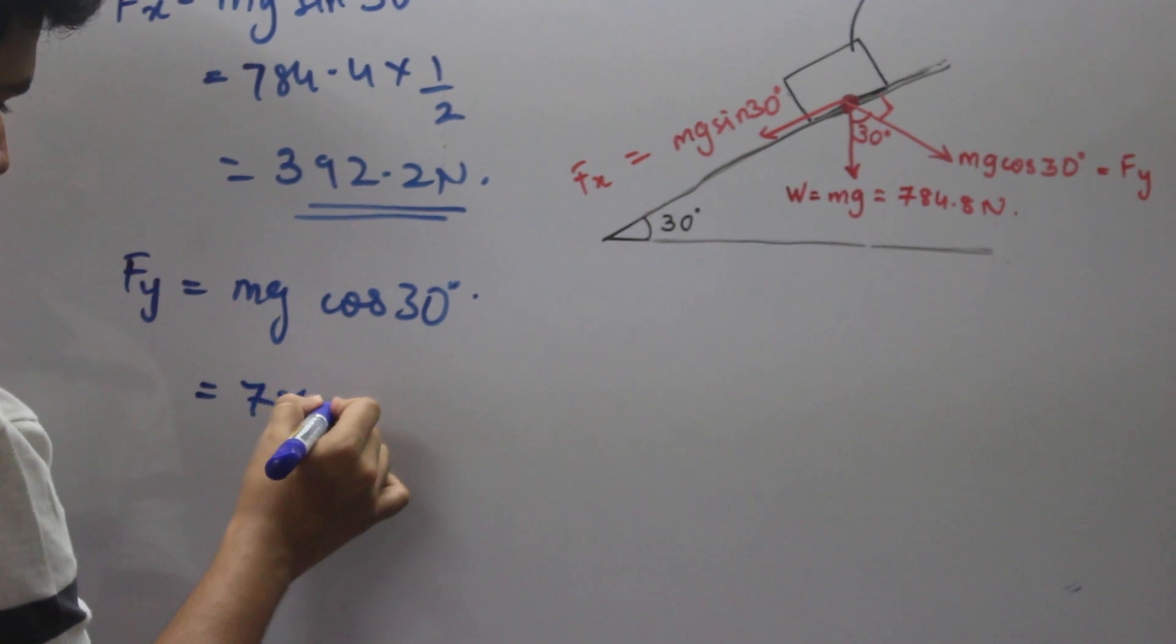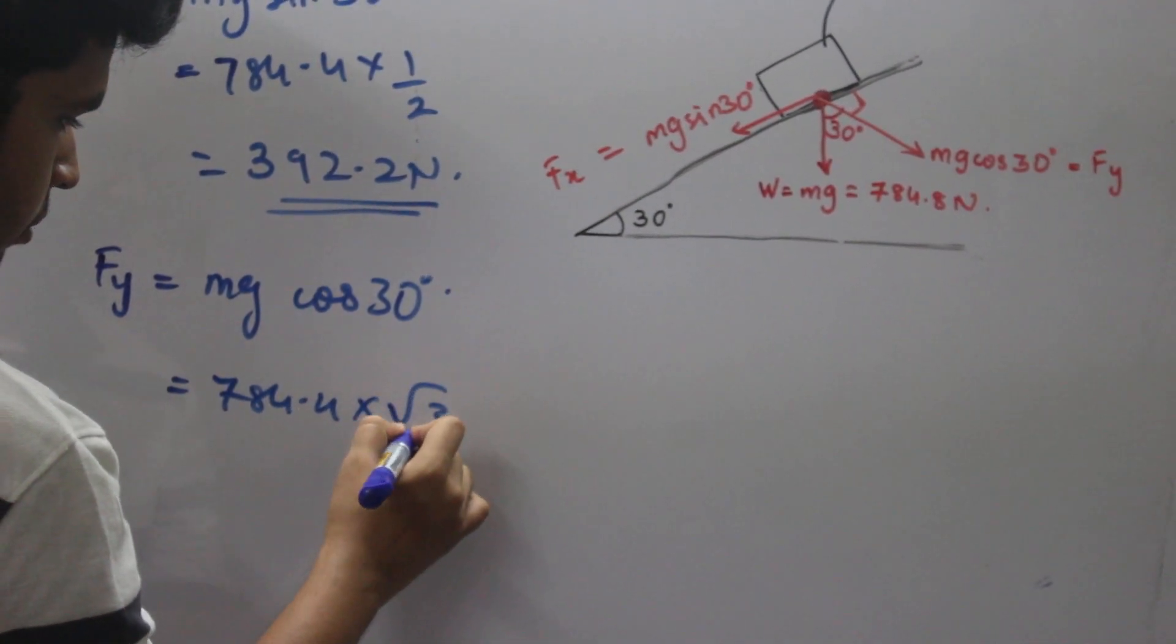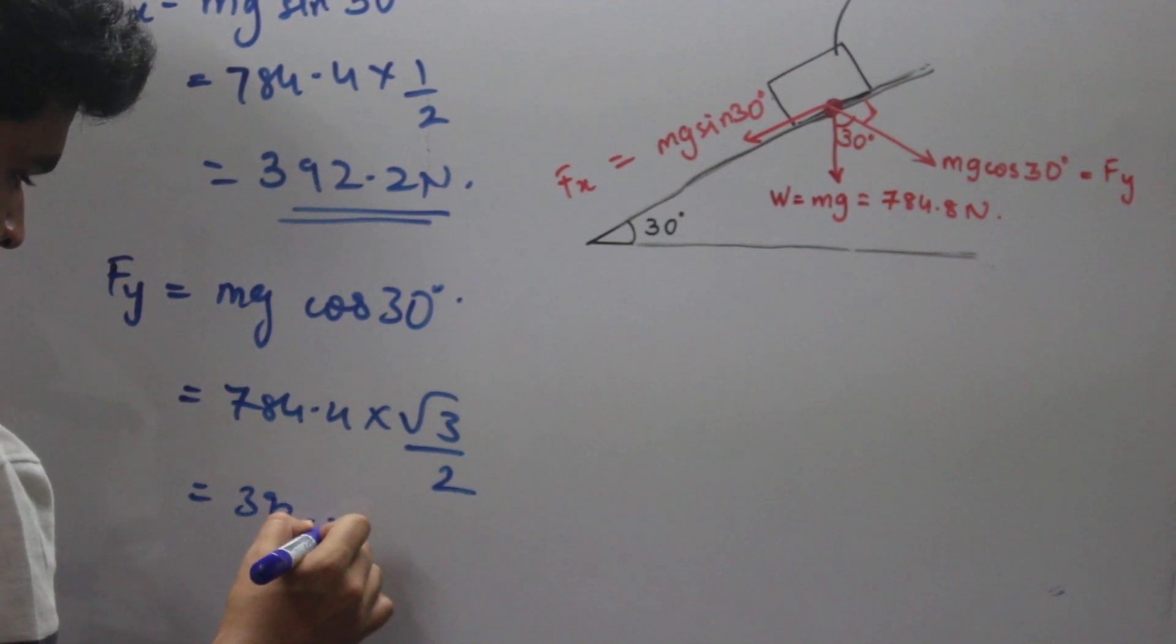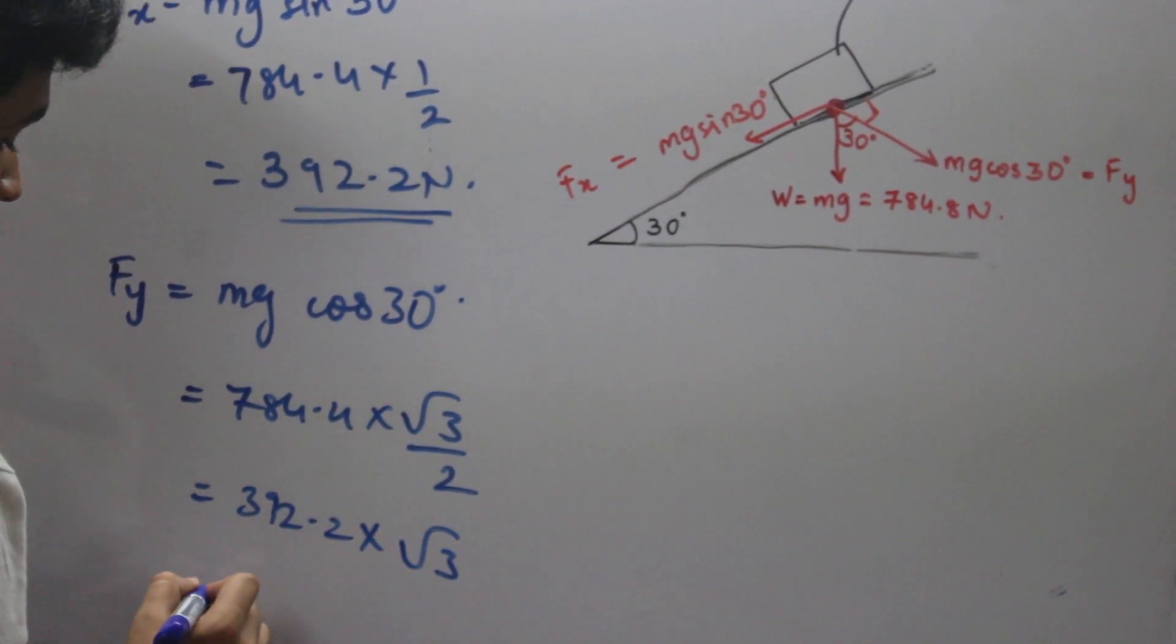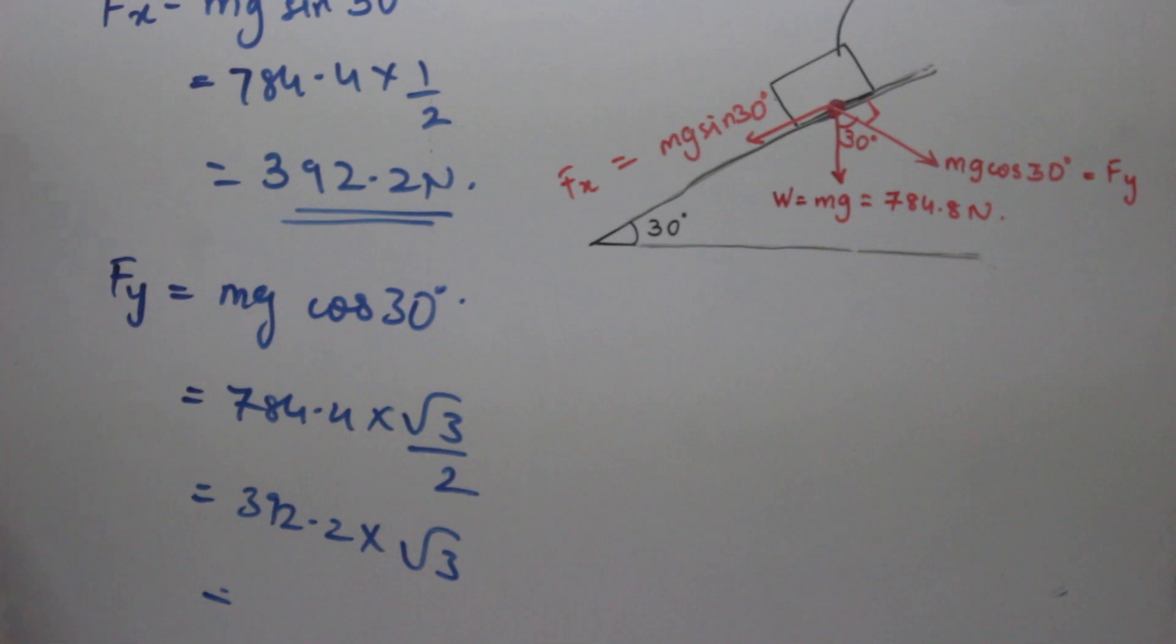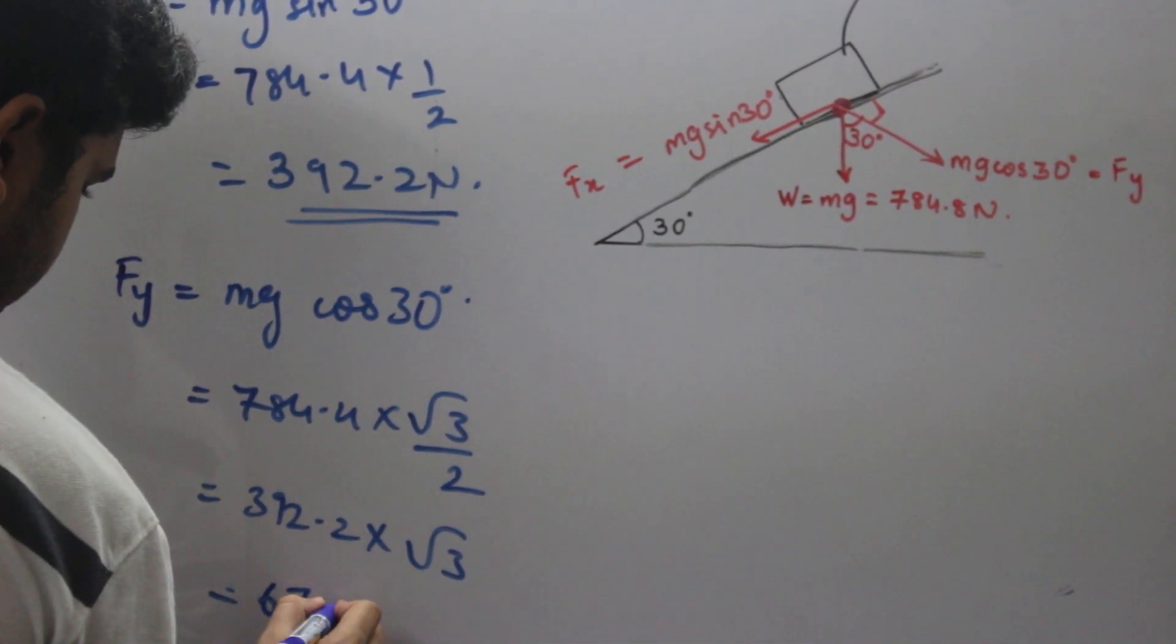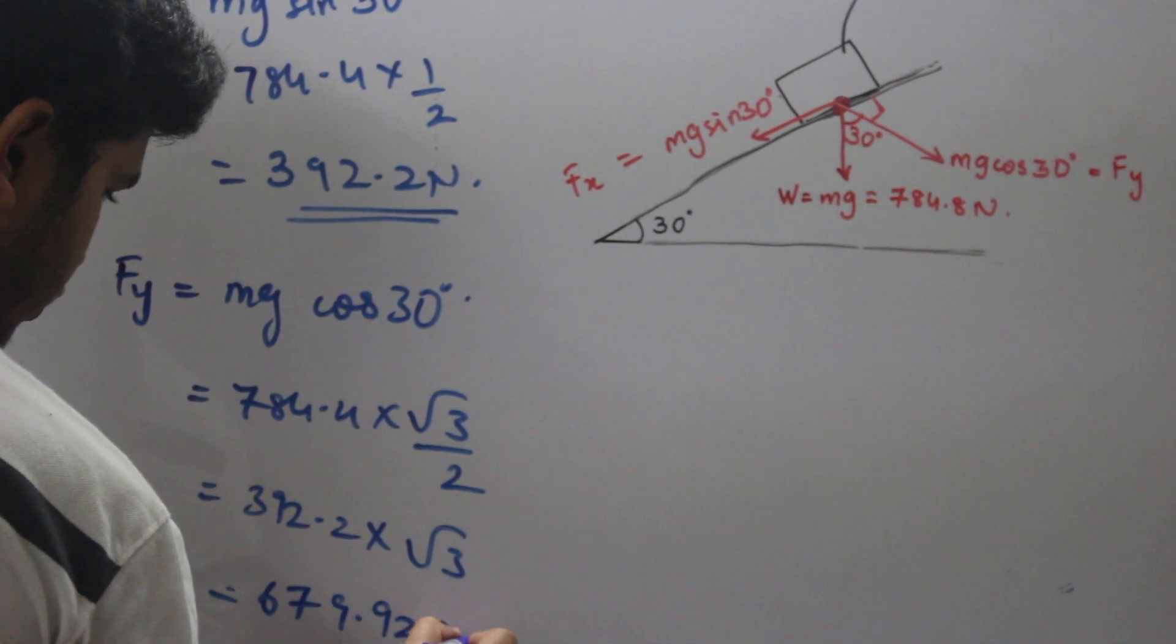f_y equals mg again, 784.4 times root 3 by 2. So this is 392.2 times root 3. Value of root 3 is 1.713. That is 679.92 newtons.